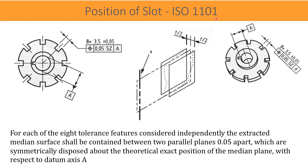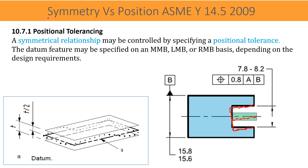Similarly, for the position of a slot: the extracted median surface refers to a specific surface that is calculated and must lie between two parallel planes that are 0.05 apart. These planes are positioned symmetrically around the theoretical exact position of the median plane, with symmetry with respect to datum axis A. Each feature has its own calculated median surface which must be positioned between two planes evenly spaced 0.05 apart, placed symmetrically around where the median plane theoretically should be with respect to datum axis A.